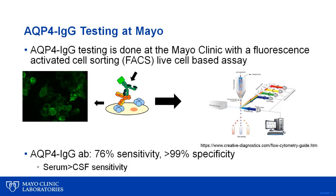The aquaporin-4 antibody is 76% sensitive and greater than 99% specific for NMOSD. The serum is more sensitive than CSF. However, this means that roughly 25% of NMOSD are negative for aquaporin-4 antibody, suggesting that there are other biomarkers not yet discovered in cases of aquaporin-4 negative NMOSD.